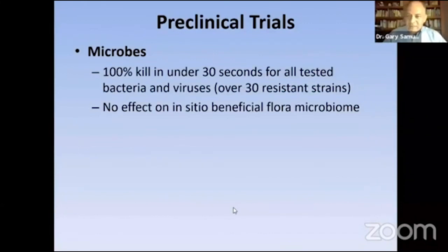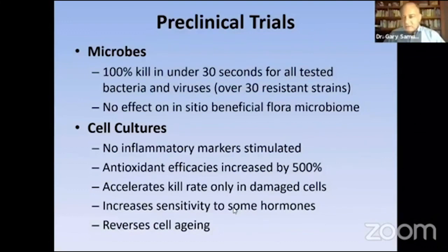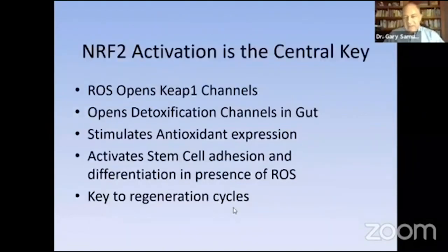It kills pathogenic bacteria — the bad guys — but has no effect on healthy bacteria, and we've done several studies on that. In cell cultures, we found that it increased antioxidant efficacy in incredible amounts. It increased sensitivity to hormones — another result proven in the gene study. It reverses cell aging: cells that were aging and unresponsive all of a sudden became responsive and new when exposed to it in cell cultures. It opens key ion channels, which are also part of the genetic pathways studied. It opens detoxification channels in the gut, stimulates antioxidant production, and is key to regeneration cycles of the cell.